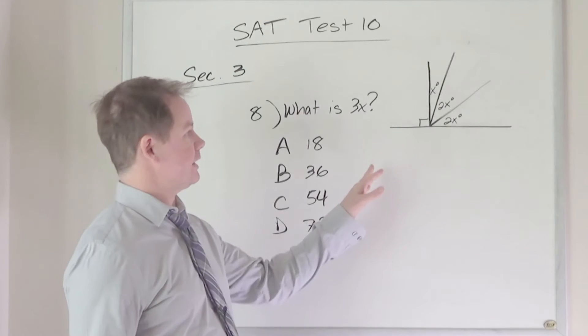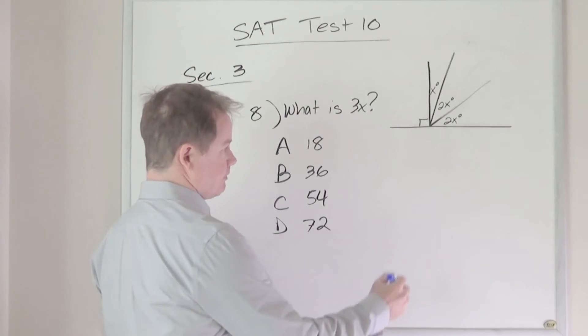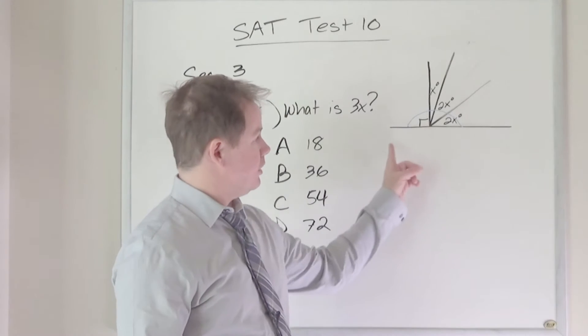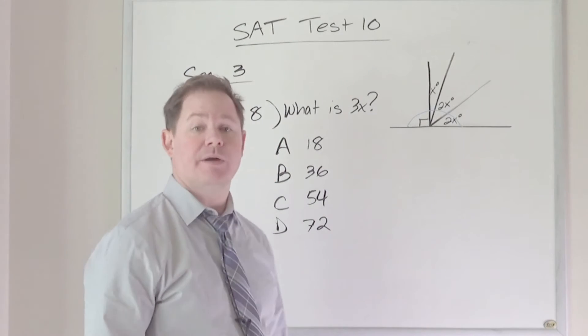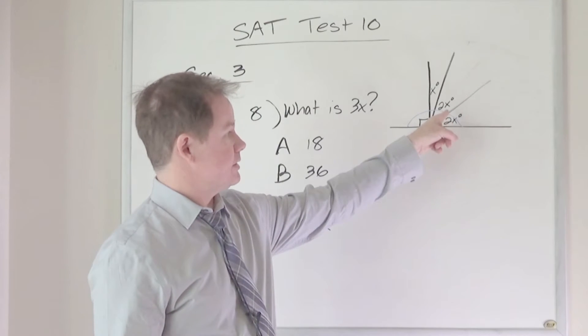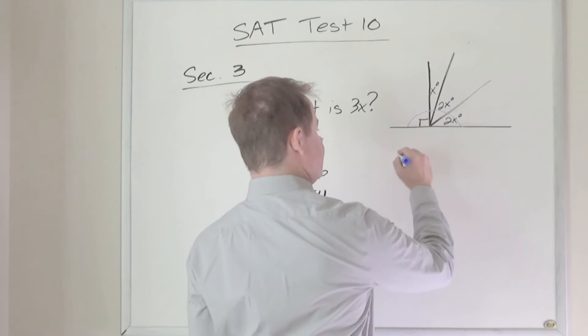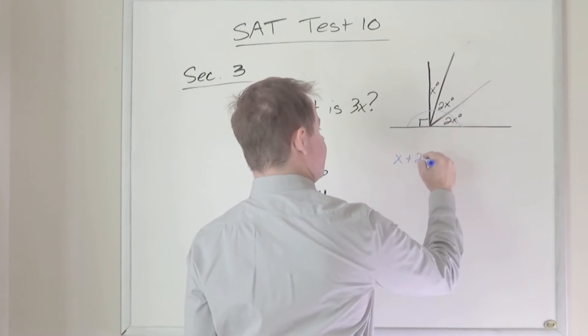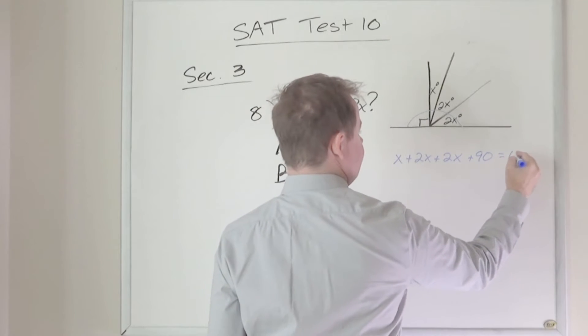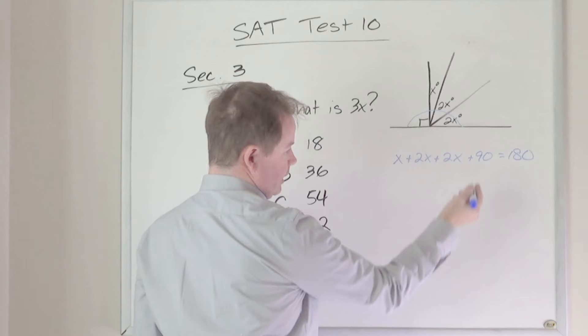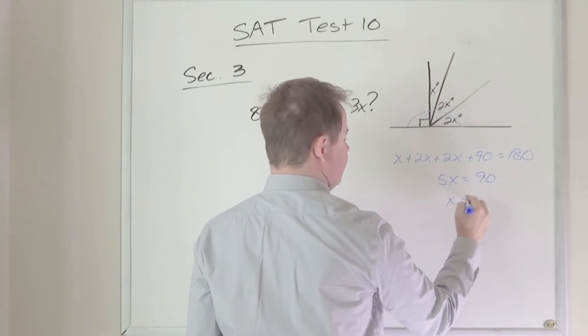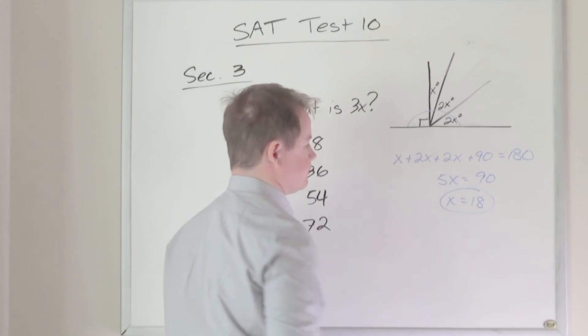The question's asking us for the value of 3x. Now to solve for x, hopefully we know that all of the adjacent angles along a straight line have to add up to 180. And with this one being 90, that means that those other angles, the x, the 2x, and the other 2x, together have to add up to 90 themselves. So x, 2x, and 2x, plus that 90 degree angle originally, have to give us 180. And when we combine like terms and subtract 90 from the other side, we get x equals 18.